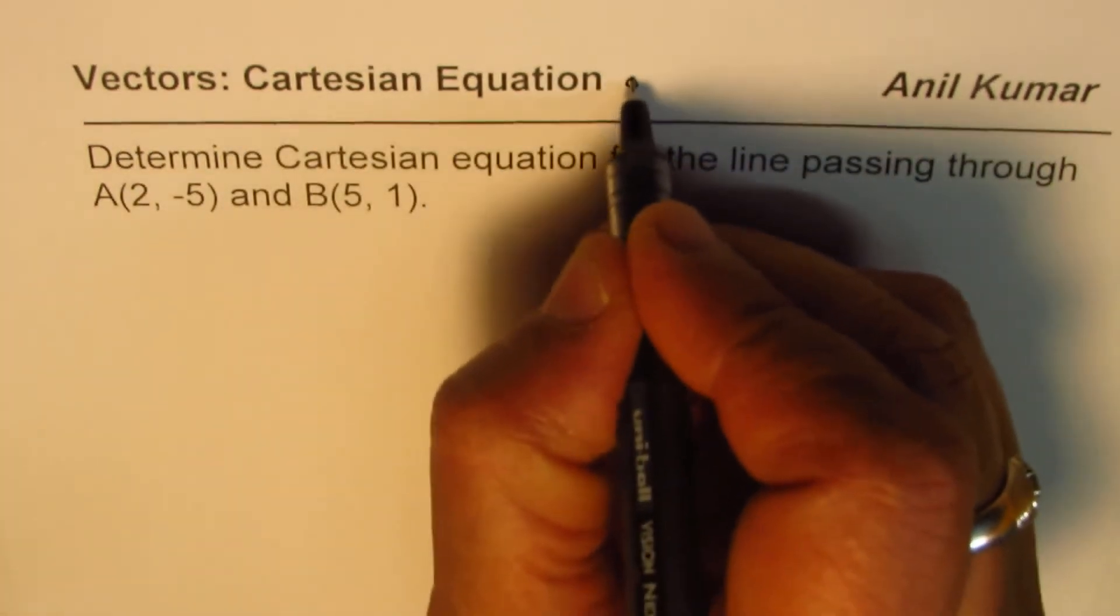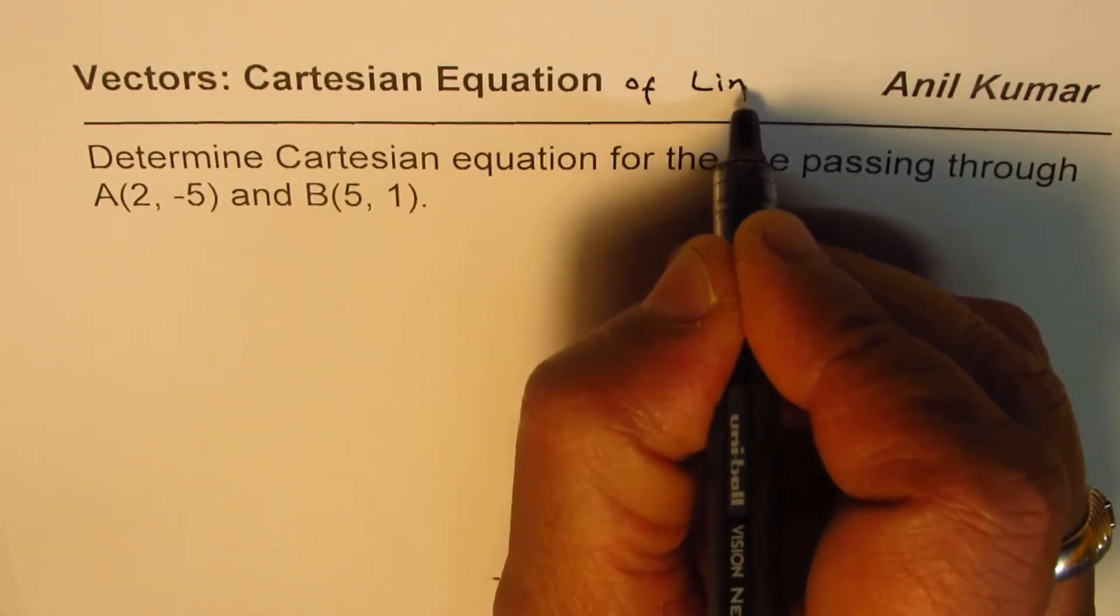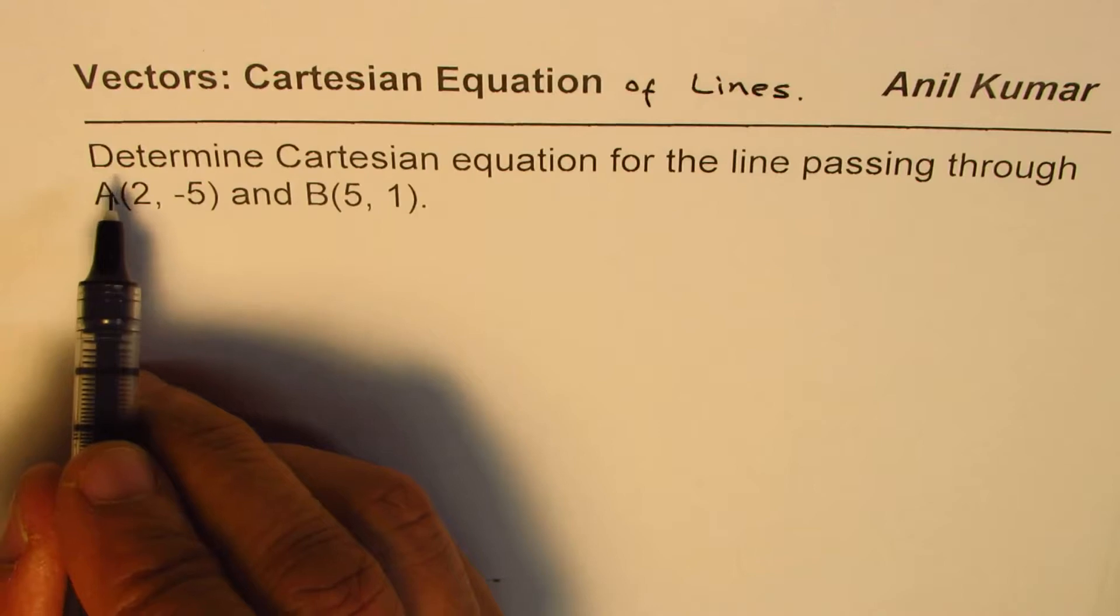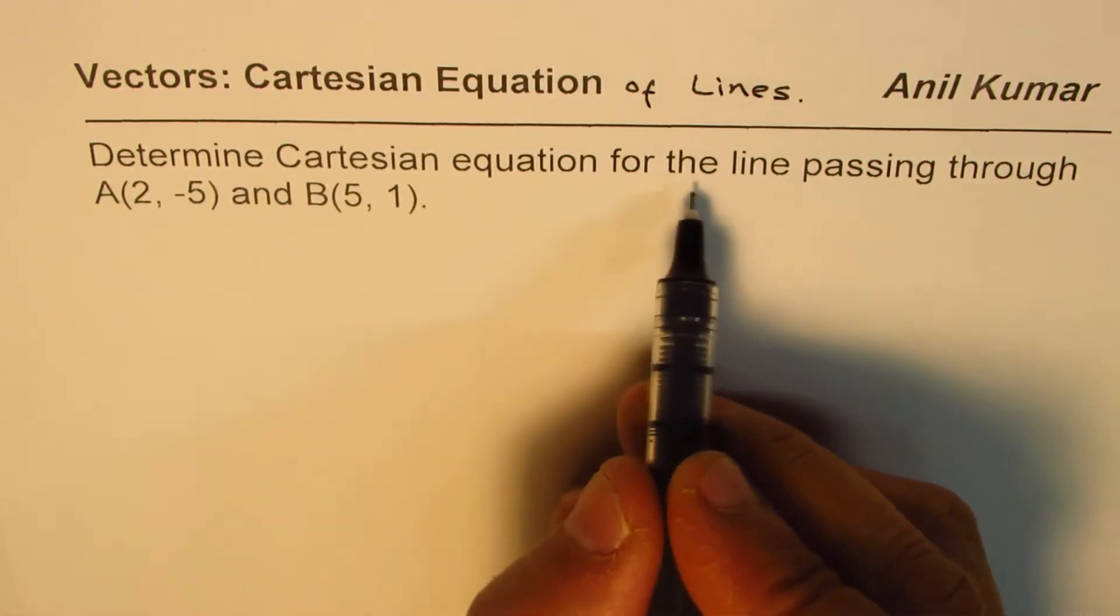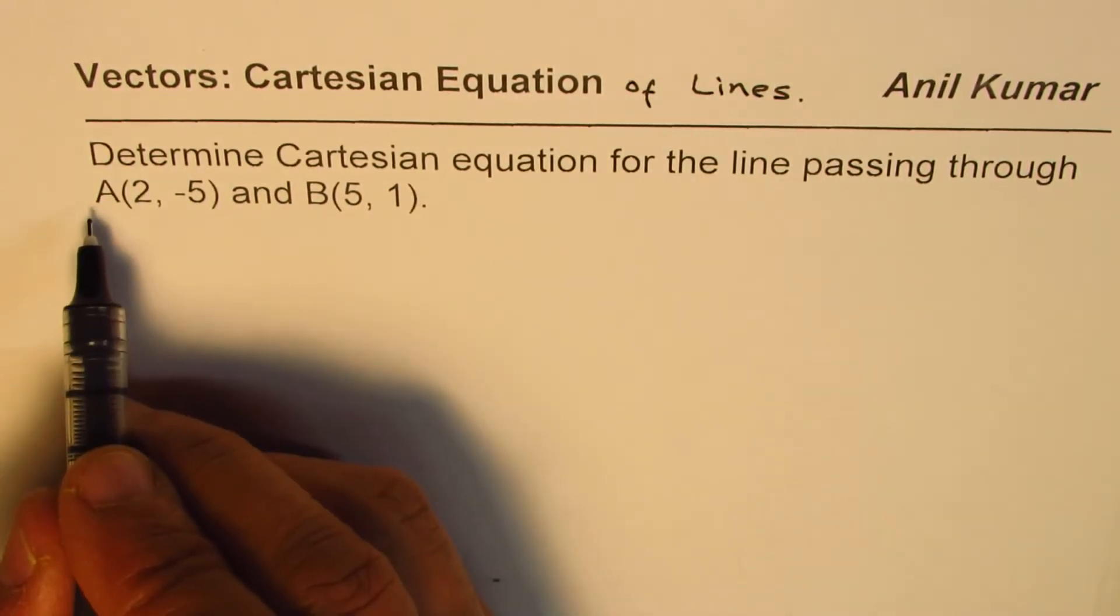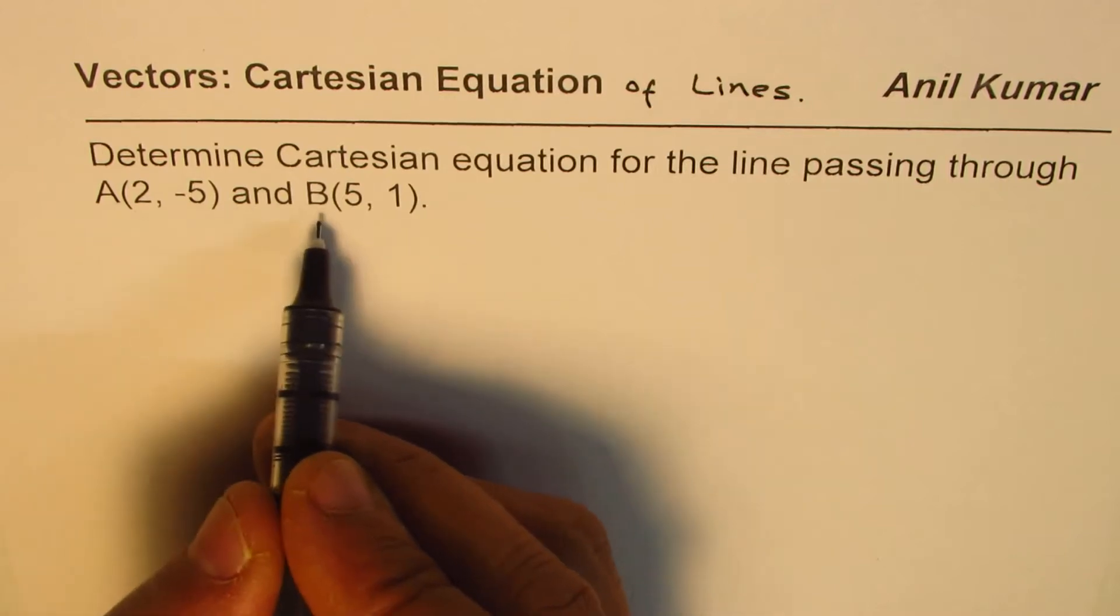So we are working with vectors Cartesian equation of lines. The question here is determine Cartesian equation for the line passing through point A(2, -5) and B(5, 1).